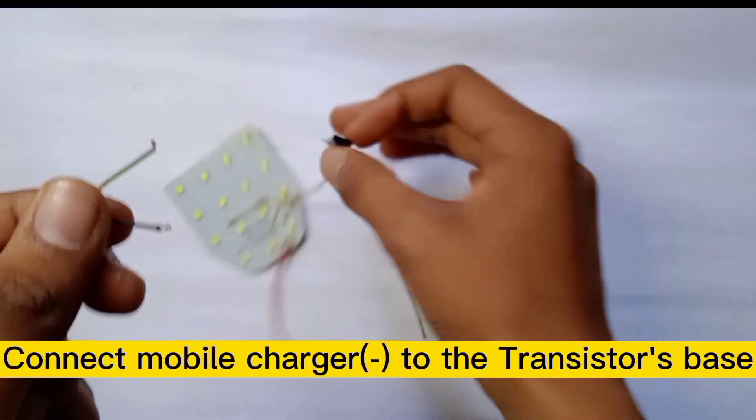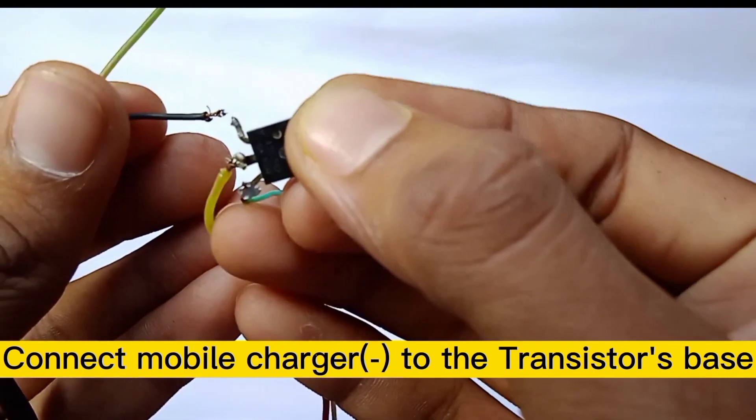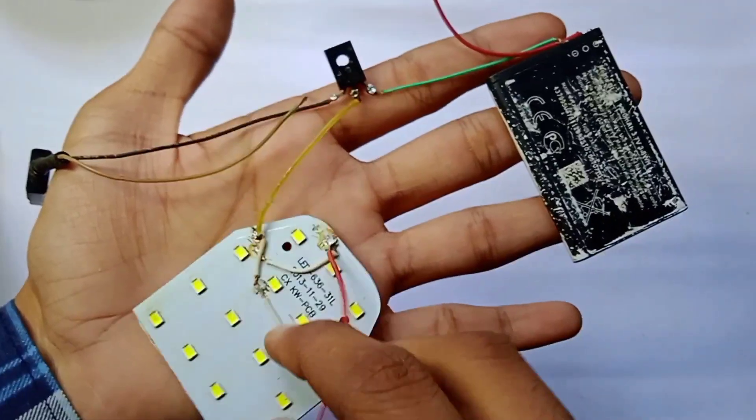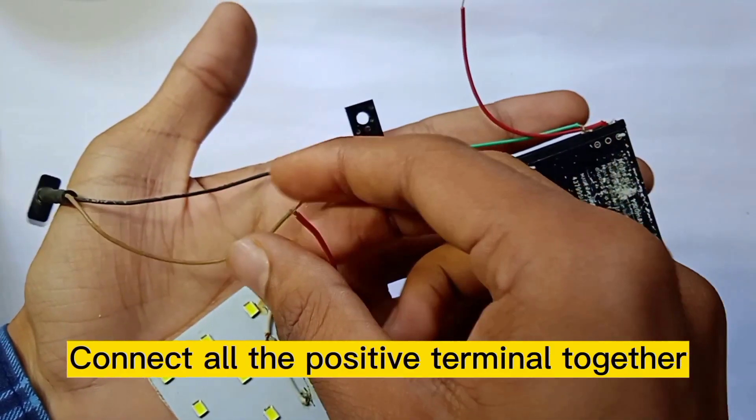Connect the mobile charger negative terminal to the transistor's base. Connect all the positive terminals together.